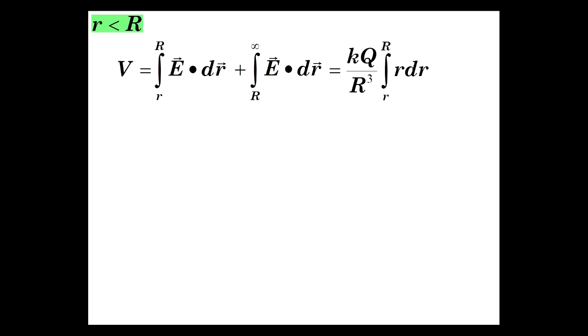So if we look at the E field that we had for inside, it was KQ over big R cubed. So these are constants, and the R is inside the integrand. And so we have to do that integral, plus we've already done the integral R to infinity of E dot dr. And that was KQ over r, the potential with respect to the edge of the sphere.